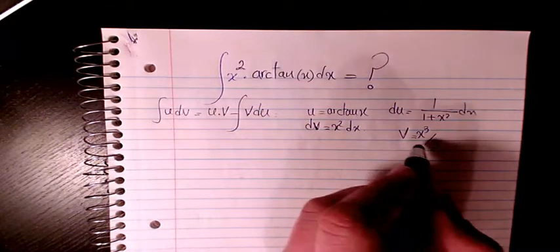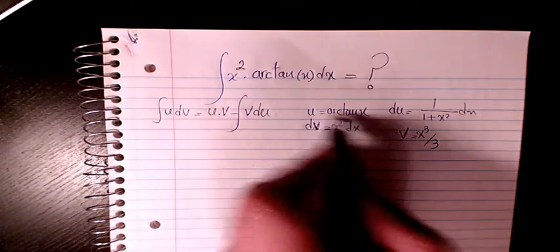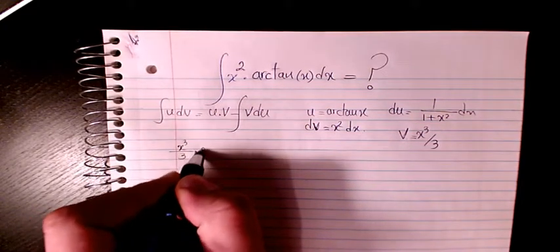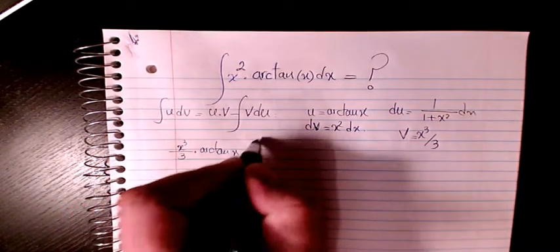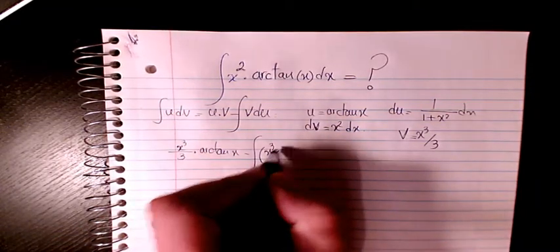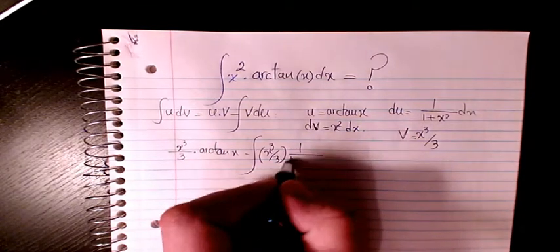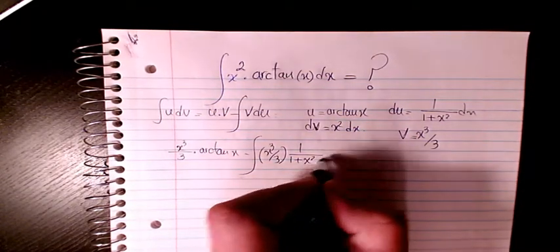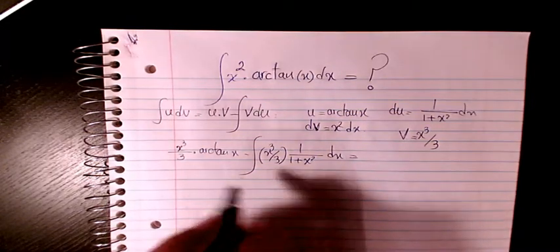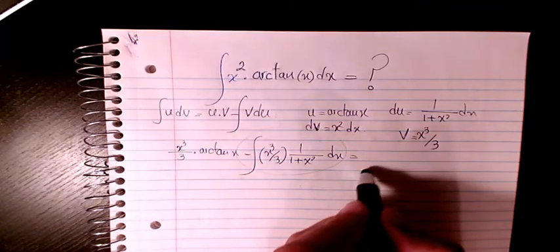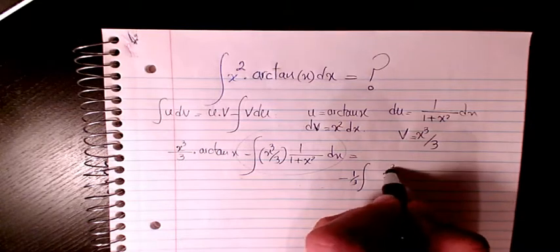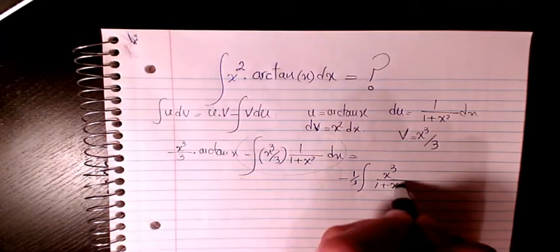Alright, so now we have u times v, which is x cubed divided by 3 times arctan(x), minus the integration of v du. V is x cubed over 3 and du is 1 over (1 plus x squared) dx. So instead of that part, I can write: negative 1 over 3 times the integration of x cubed divided by (1 plus x squared) dx.